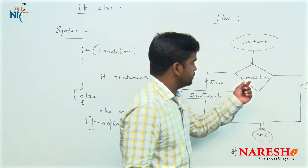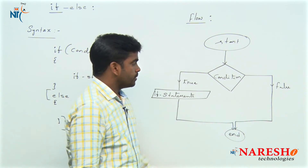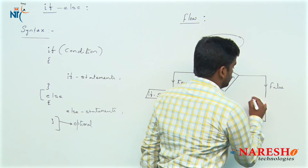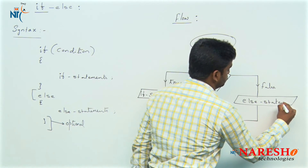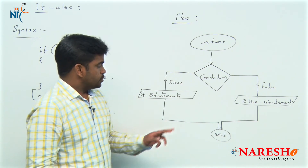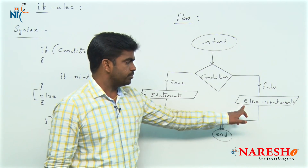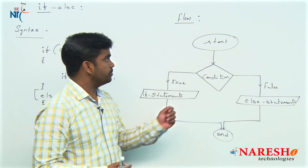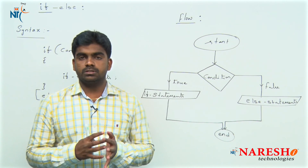The flow starts, checks the condition. If the condition is true, if-block statements execute. If the condition is false, the else block — which is optional — executes its statements and sends control to end. With two blocks defined, one block executes on true and another on false. This is the syntax and flow of if block and if-else block execution.